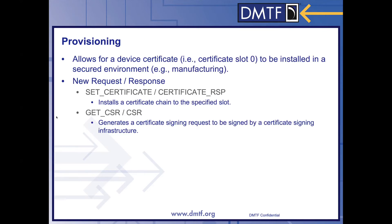Provisioning allows for a device certificate to be installed in a secure environment, such as a secure manufacturing environment. To do this, there are two new requests and responses that were created. They are setCertificate and CertificateResponse, getCSR, and its corresponding response, CSR.